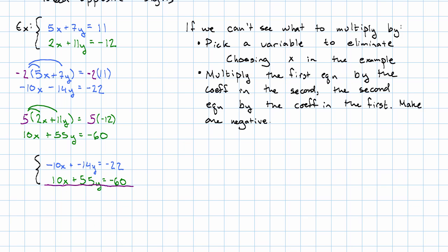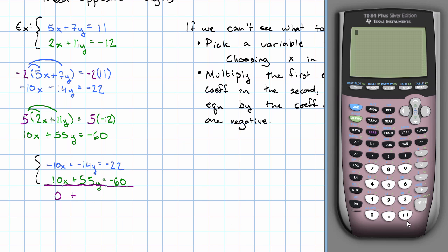negative 10x plus positive 10x is 0. Negative 14y plus 55y, let's use the calculator. Negative 14 plus 55 is 41y equals negative 22 plus negative 60 is negative 82. Okay, so 41y equals negative 82. Dividing both sides by 41, we get y is negative 2.